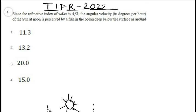This question was asked in TR4 2022 physics paper and says that since the refractive index of the water is 4 by 3, what is the angular velocity of the sun as known which is perceived by the fish in the ocean deep below the surface. Four options were given.